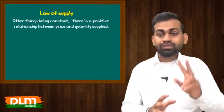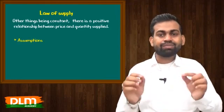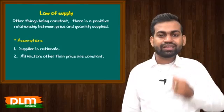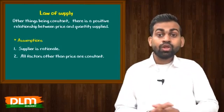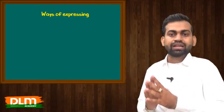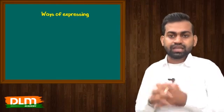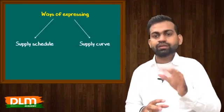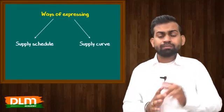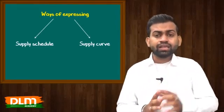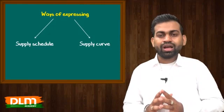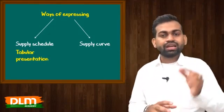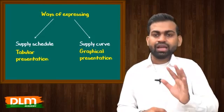This is law of supply. Law of supply do assumptions maanke chalta hai: supplier is rational, aur price ke alawa baki saare factors constant rahenge. Law of supply ko explain karne ke ya express karne ke hamare paas do tariqe hai — supply schedule and supply curve. Price and quantity supplied ke is positive relationship ko agar tabular presentation dein to supply schedule, aur agar graphical presentation dein to supply curve.